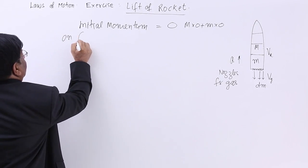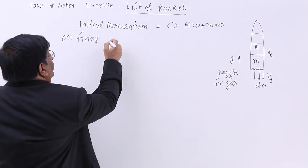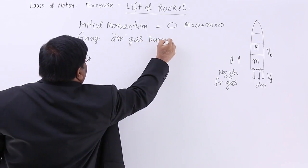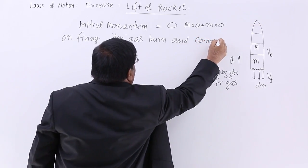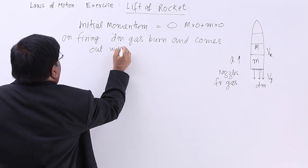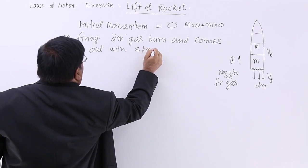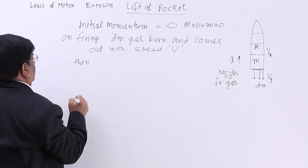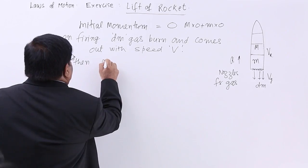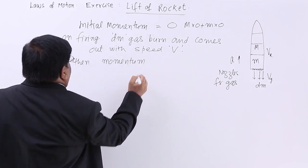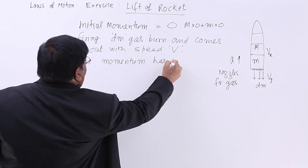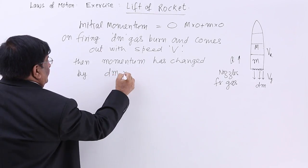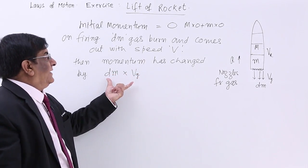On firing, a small quantity dm gas burns and comes out with speed v. Then momentum has changed.